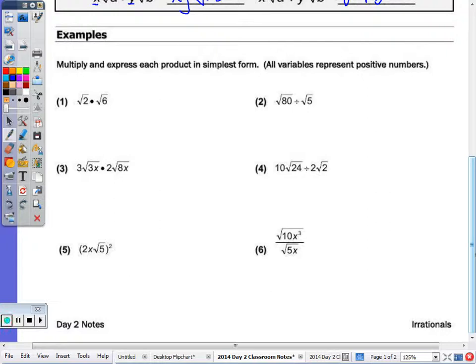And number one, there are no coefficients, or there are coefficients of 1, so 1 times 1 would just be 1. The radicands, 2 times 6 would be 12. To simplify 12, I look for the largest perfect square factor, non-perfect square factor. 12 is divisible by 4, so 4 times 3. Final answer would be 2 radical 3.